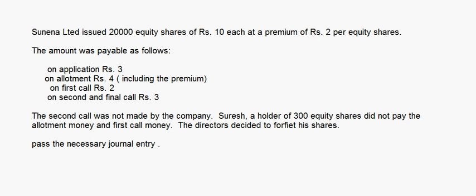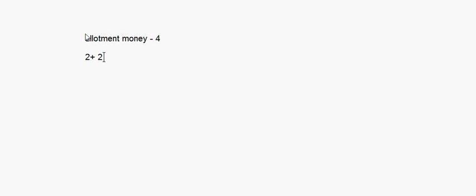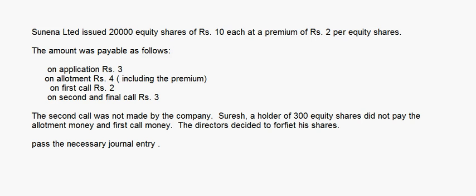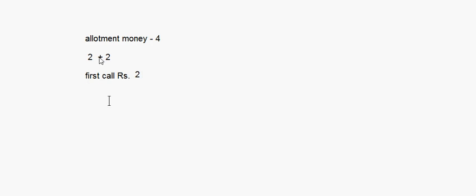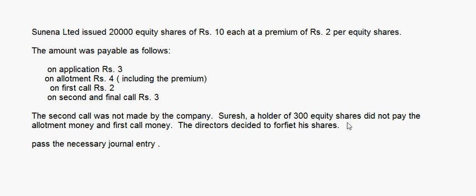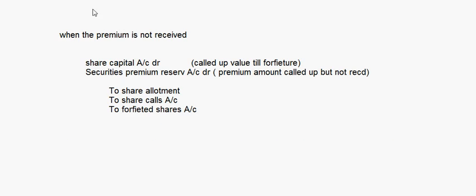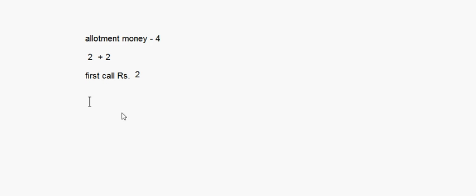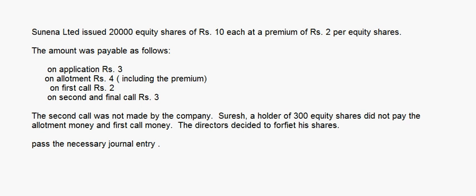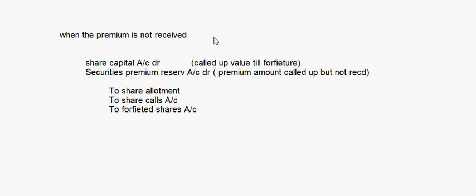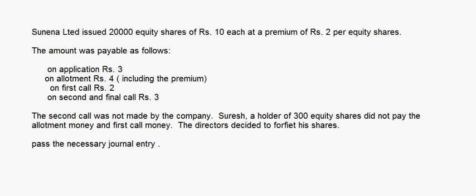Allotment money is rupees 4, which is 2 plus 2 - rupees 2 is towards the share capital and rupees 2 is the securities premium. First call is rupees 2. Now this shareholder holding 300 equity shares did not pay the allotment money and the first call money. Since the allotment money is not paid, the premium is also not paid - so this comes under the second case where the premium is not received.